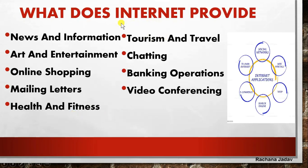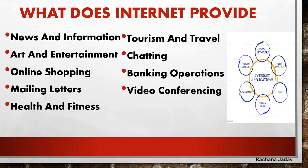Now, how does the internet provide us facilities? First of all, it provides us news and information. For example, during COVID time, you must have seen that you got news about where the cases are more, how it is affecting, and also about the vaccines. You can get information about politics, sports, education, and art and entertainment - you can read stories and audio books online.